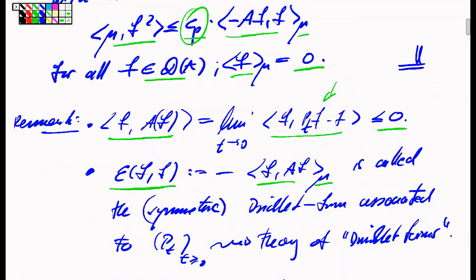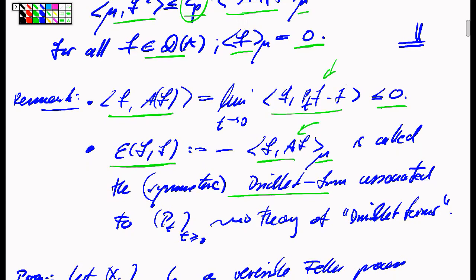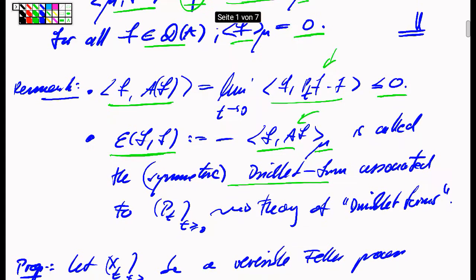This bilinear or quadratic form on this L2 space can also be the starting point of a theory of its own. We could develop the whole theory of stochastic processes starting from this quadratic form, which leads to the theory of symmetric Dirichlet forms associated to this semigroup. That would be the subject of a separate series of lectures not included in this course. Nevertheless, this notation is sometimes useful even if we don't dive deeply into the theory of Dirichlet forms, which simply replace the quadratic form on the right-hand side by the notation E(F,F).